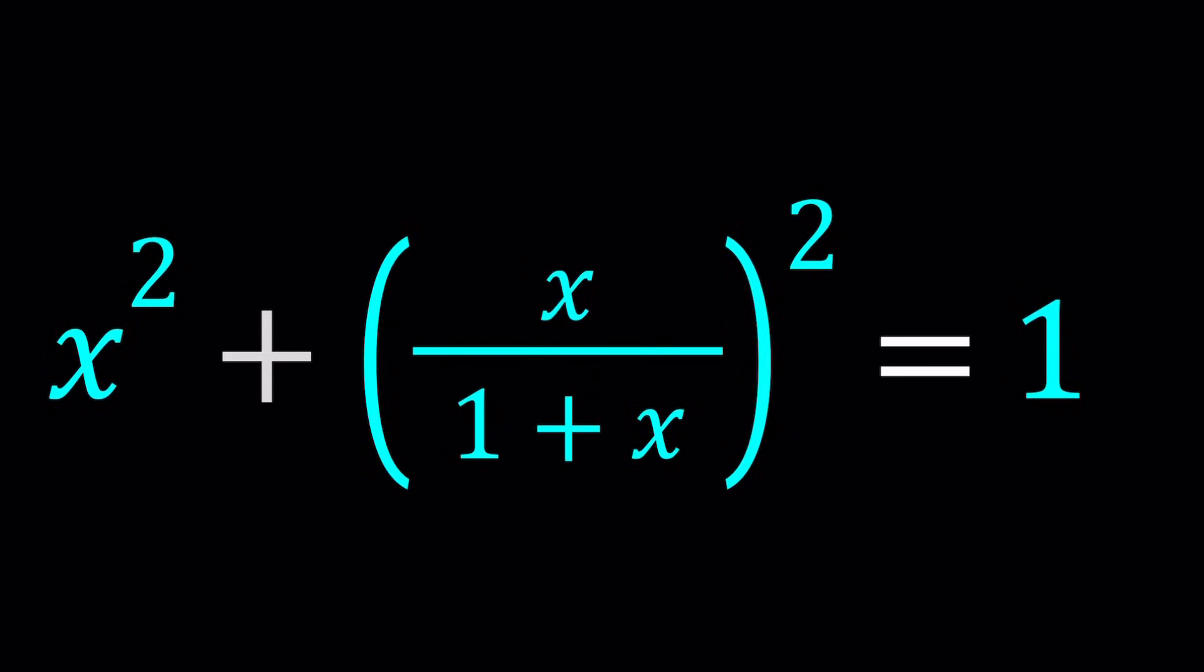Hello, everyone. In this video, we're going to be solving an interesting rational equation. We have x squared and x over 1 plus x quantity squared equals 1, and we're going to be solving for x values. I'll be presenting two methods, and let's start with the first one.